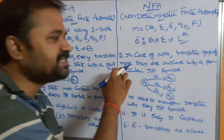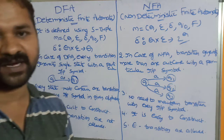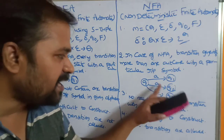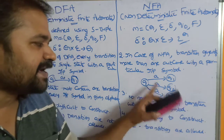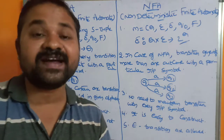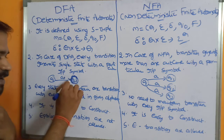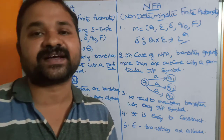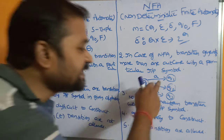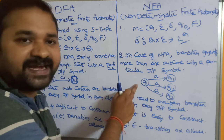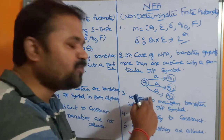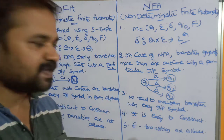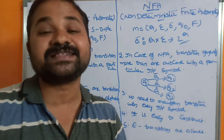In the case of NFA, a transition can generate more than one outcome with a particular input symbol. If we apply 'a' on Q, we can go to Q1, Q2, or Q3. That's why it is called Non-Deterministic Finite Automata — 'deterministic' means only one state is produced, whereas 'non-deterministic' means we can move to multiple states. We can have multiple edges on a single input symbol.